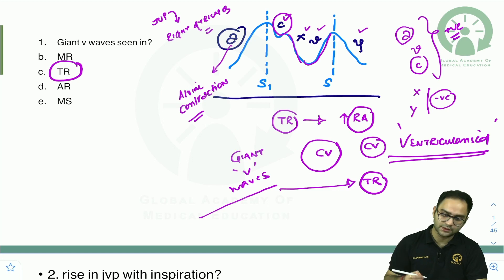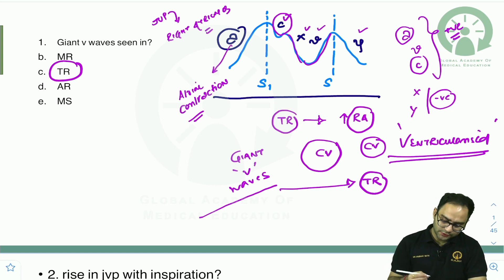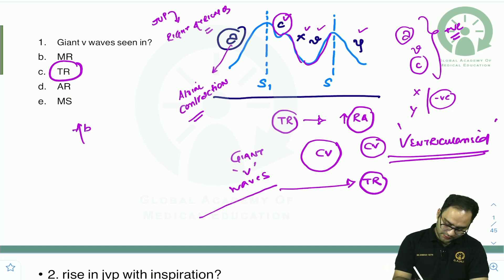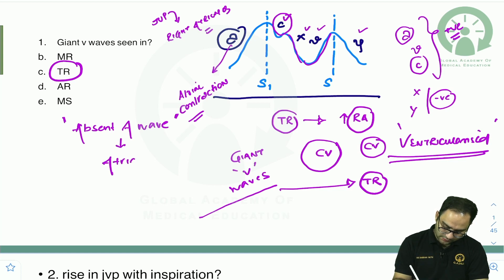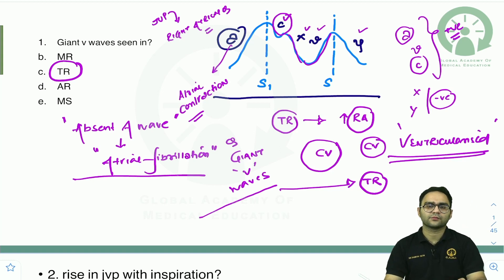Giant V waves are seen with tricuspid regurgitation — a very common exam question. Another repeat question: where do you see absent A wave? The absent A wave is seen with atrial fibrillation. These are two important repeat questions from this area that you cannot afford to miss.